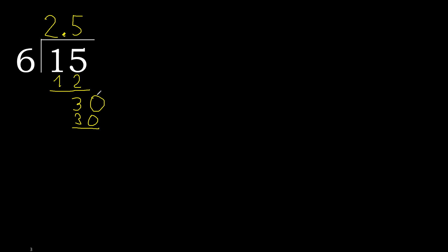Subtract: 30 minus 30 is 0. Remainder is 0, therefore we finish. 15 divided by 6 is 2.5.